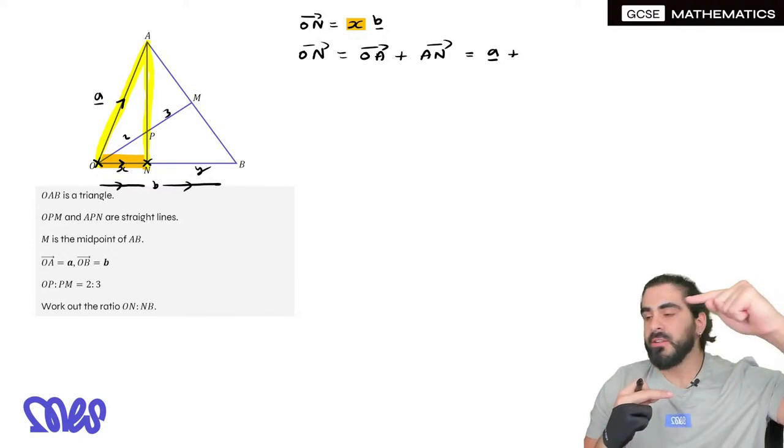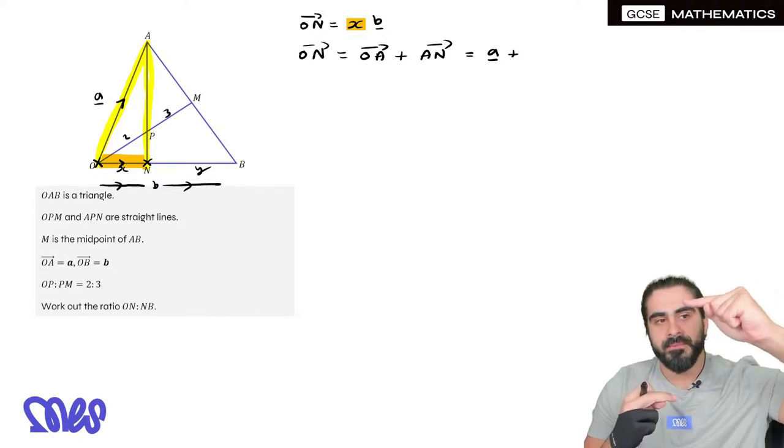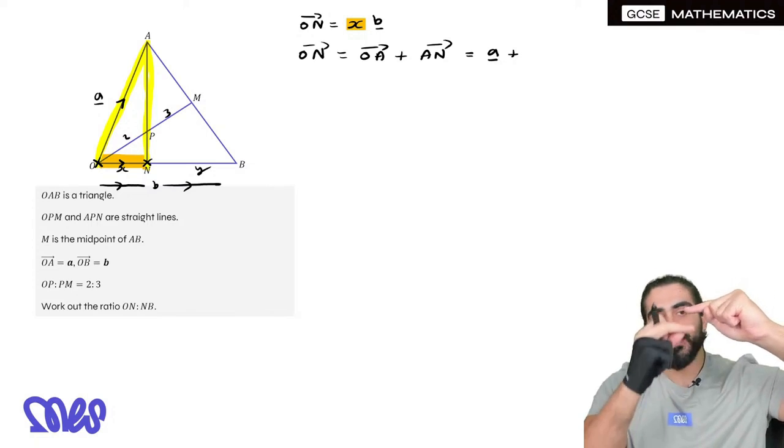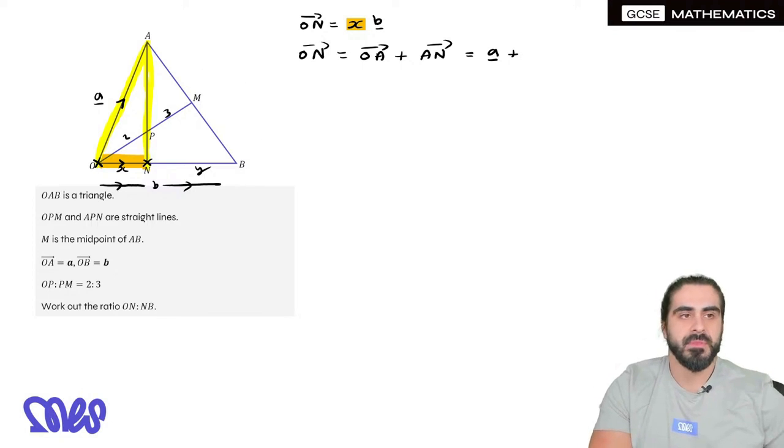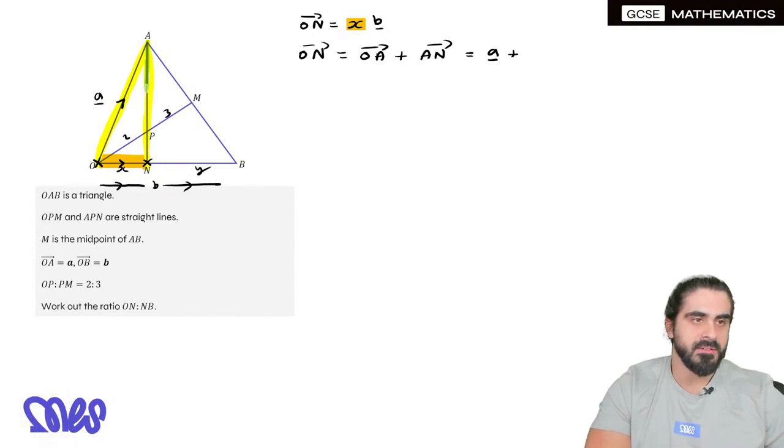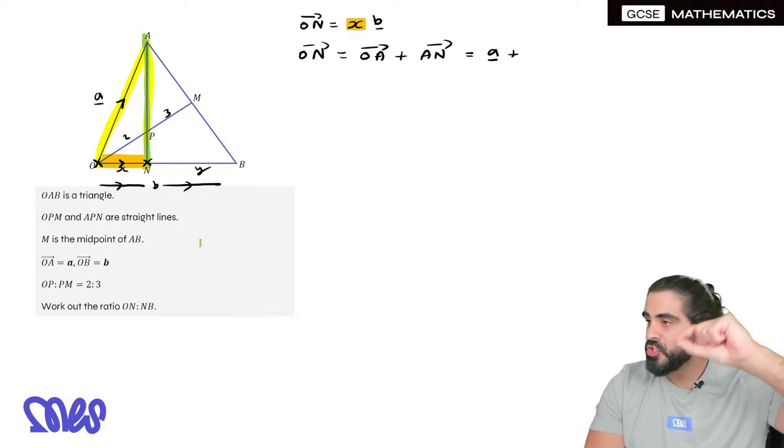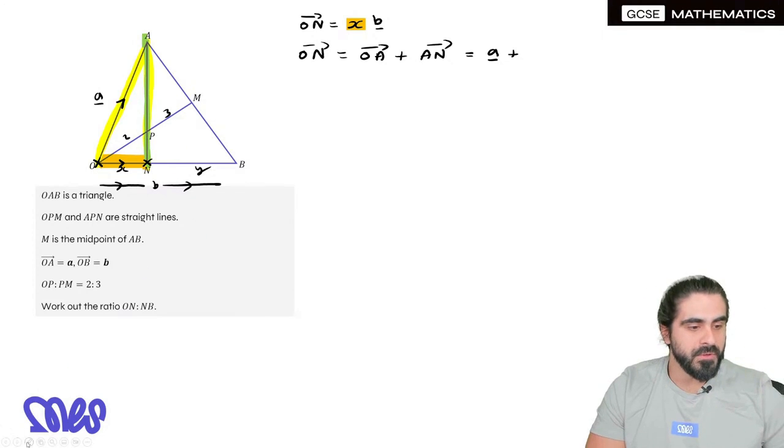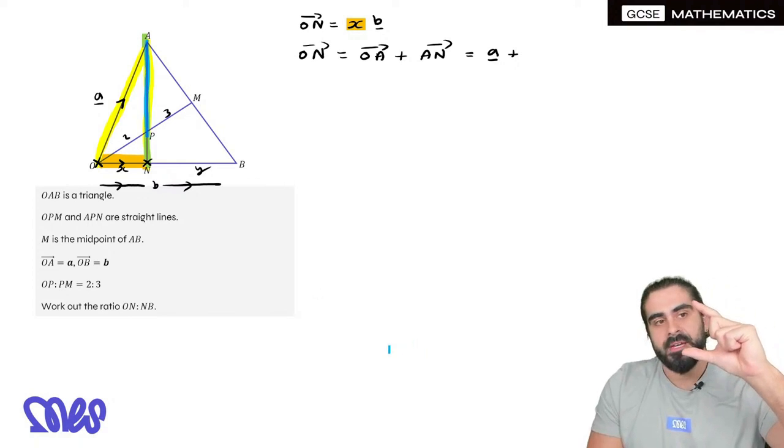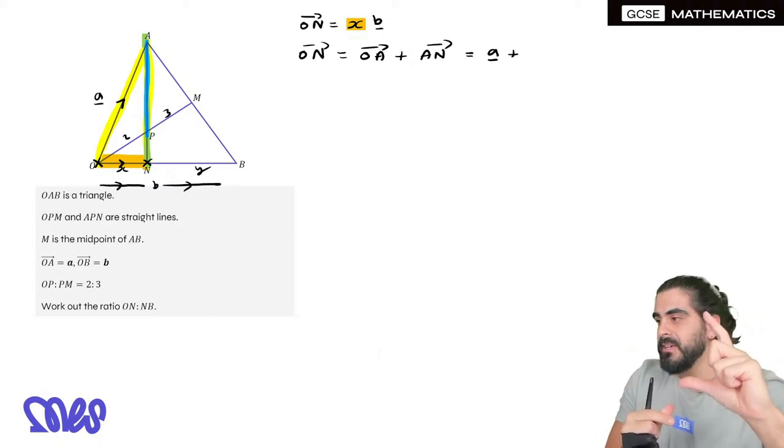Look at the full line of A to N. A to N is an extension of A to P. This full length which I've highlighted, A to N, is an extension of A to P. So if we find A to P and we make it longer, we get A to N.